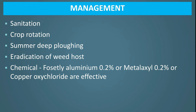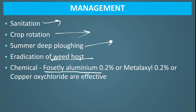Favorable Conditions: More than 90% relative humidity, temperature 15 to 20 degree centigrade, and intermittent rain or cloudy weather. Management: For management of the disease, we should adopt integrated disease management practices like sanitation of the field, crop rotation with non-host, summer deep plowing, eradication of weed host, and spray of chemicals like fosetyl aluminum 0.2% or metalaxil 0.2%. We can also spray copper oxychloride.